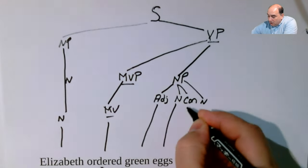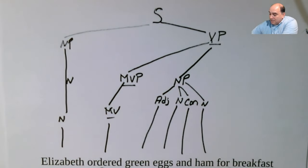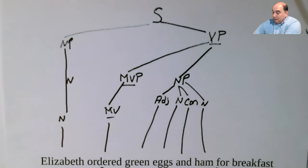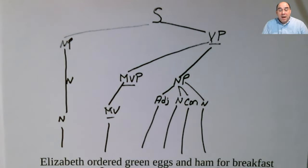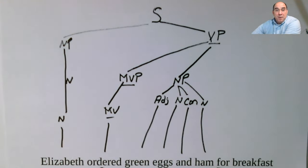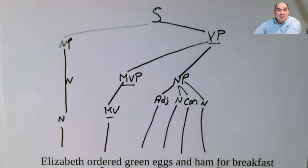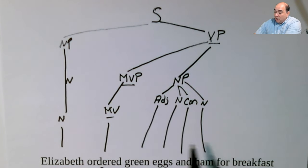So we've got these all coming down here. The last one here is 'for breakfast.' Whenever you see a preposition — and this is a preposition right here — you've got to ask yourself: what is its form and what is its function? Its form is a preposition. But what's its function? What's it doing here? It's describing something. Is it describing the verb or is it describing the noun? The noun here would be 'green eggs and ham.' Is 'for breakfast' describing it? No — so it's going to be describing the verb.